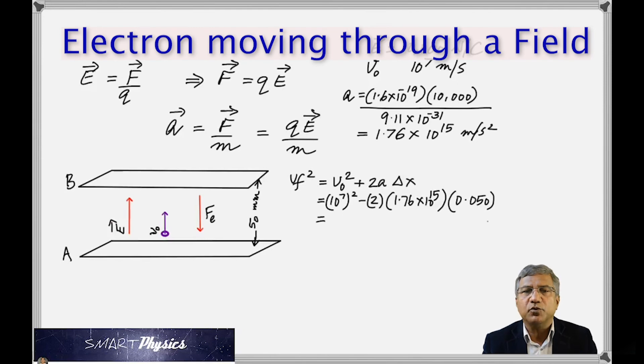So since I want the problem to work, and now you should have understood that the initial velocity was not enough. So I'm going to change that. I'm going to say let the initial velocity be 5 times 10 to the 7 meter per second. So that is enough for it to reach plate B, and now mathematically, we have a positive quantity.